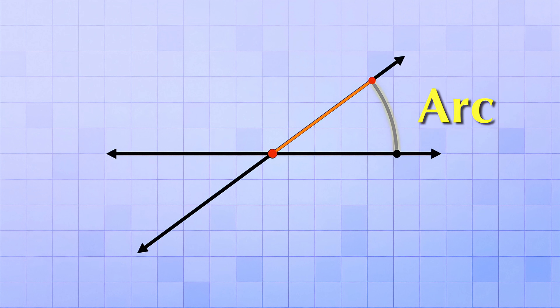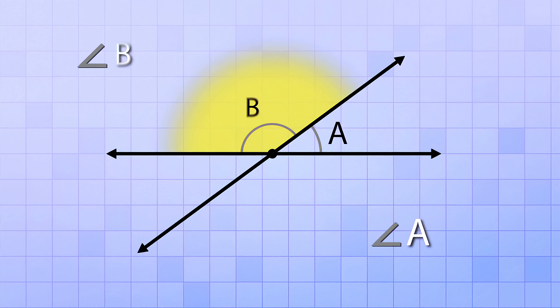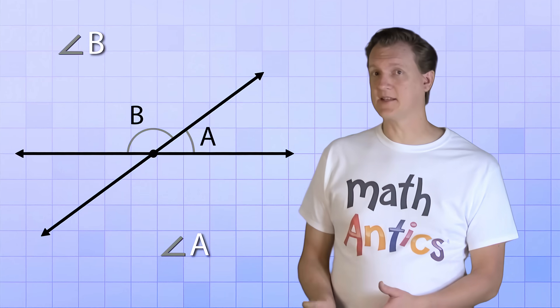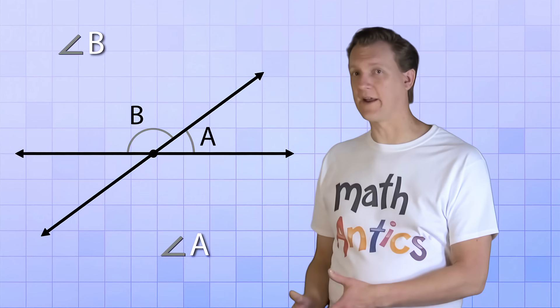This arc can represent the angle that's formed when we rotate the segment from one position to another, like from this line to that line. And now, if we shrink down that arc so that it's close to the intersection point, and then put a letter by it, like the letter A, we have another way of showing an angle, angle A. And we can do this with any angle. So the angle up here, we can also draw an arc and call it angle B. So whenever you see a letter next to a little arc like this, it means that it's the name of the angle formed by that arc.